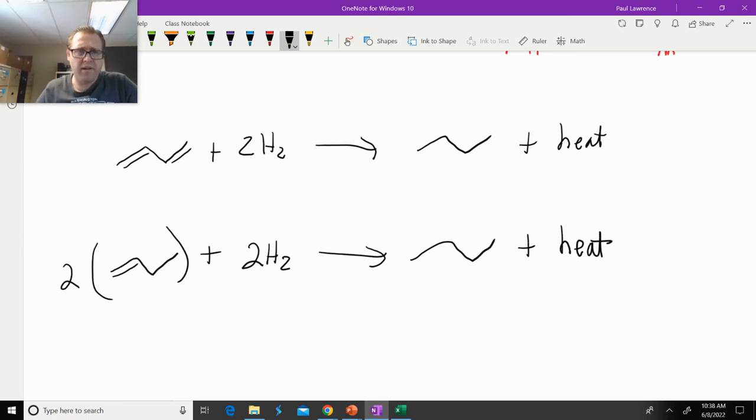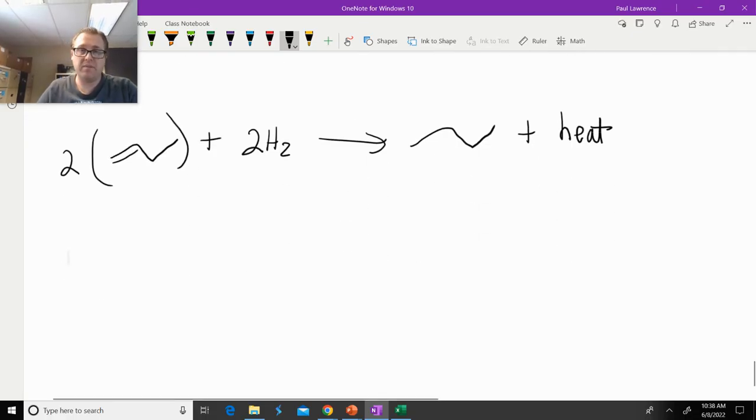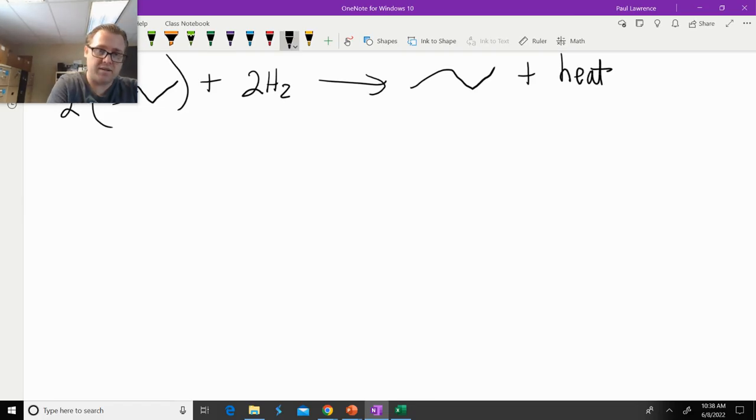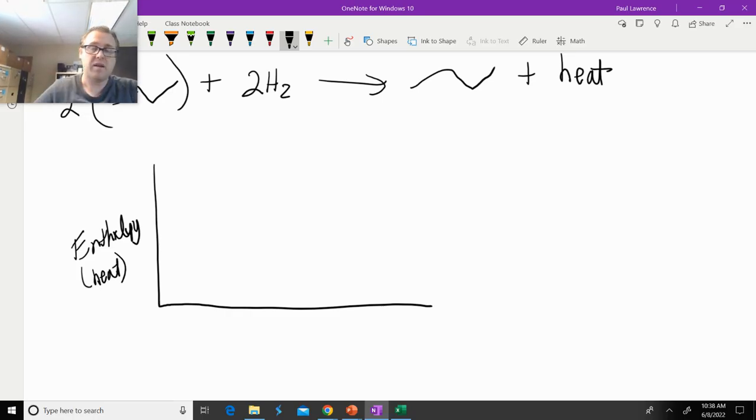Now, how is this going to tell us, or answer the question, which one is more stable? Well, it comes back to energetics. So if we draw ourselves a little graph here, and on the y-axis, we have enthalpy, which is simply the heat that's going to be released when you do this hydrogenation reaction.